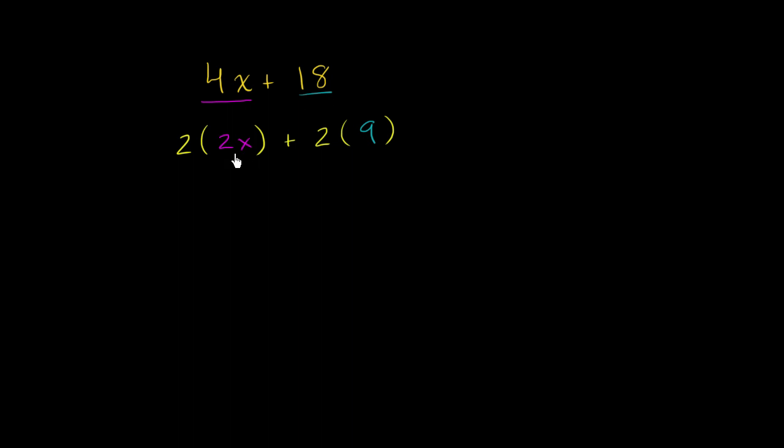And now it might be clear that when you apply the distributive property, you will usually end up with a step that looks something like this. Now we're just going to undistribute the 2 right over here. We're going to factor the 2 out.